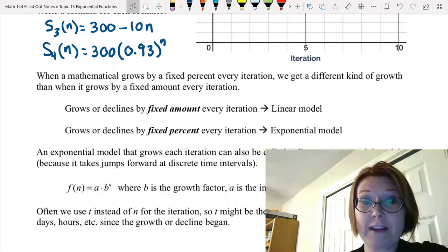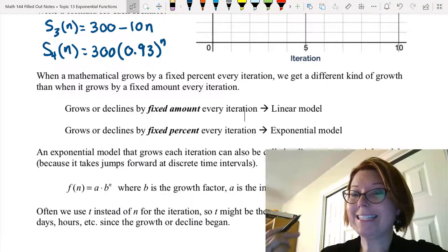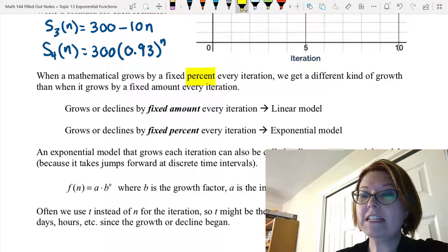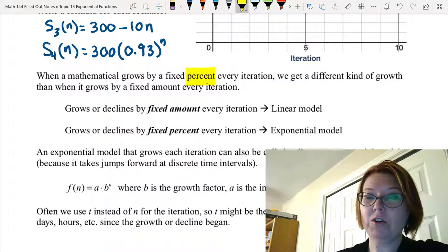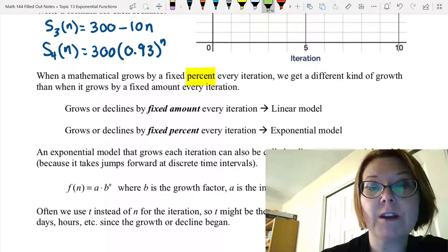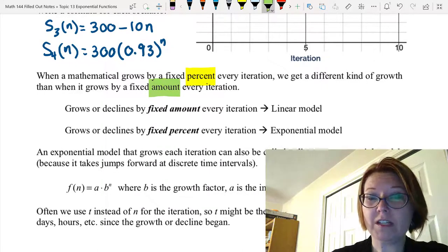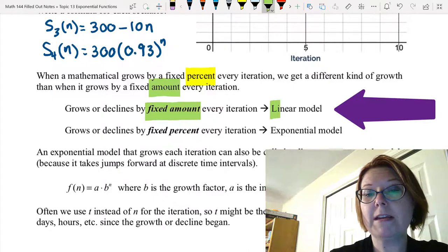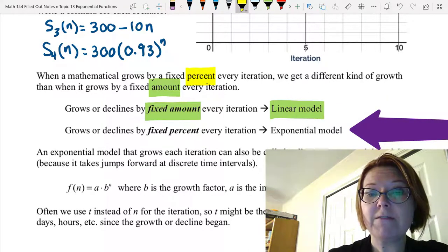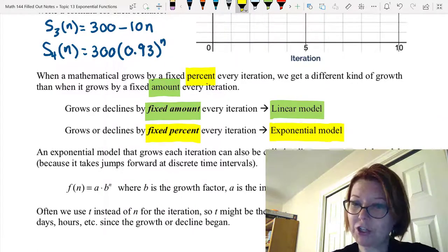Let's just summarize what we found out. When a mathematical model grows by a fixed percent every iteration, we get a different kind of growth than when it grows by a fixed amount every iteration. So that word percent is very different than that word amount. When something grows or declines by a fixed amount every time, what we get is a linear model. On the other hand, when something grows or declines by a fixed percent every iteration, what we get is called an exponential model.